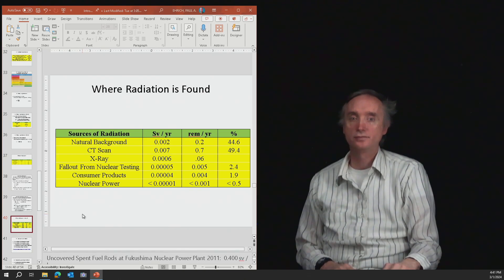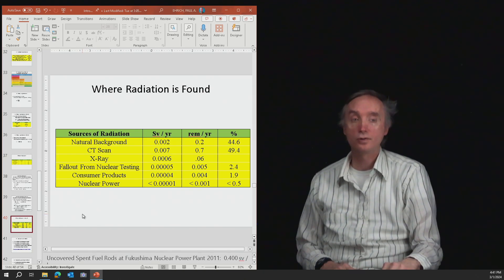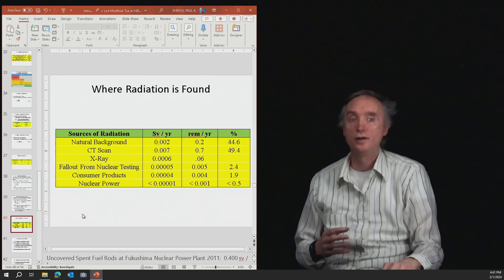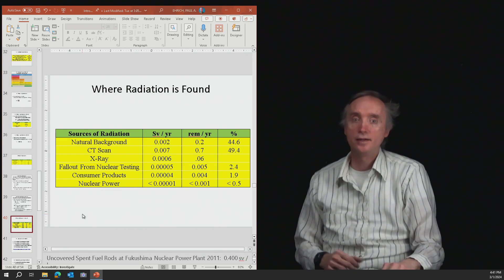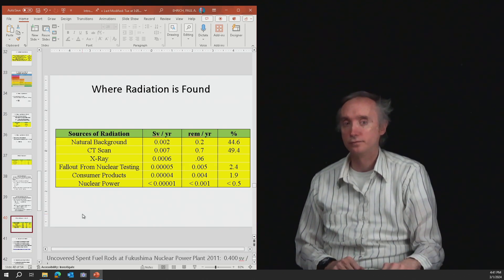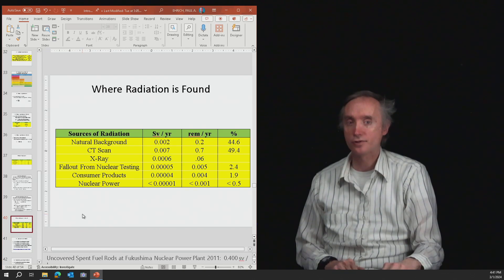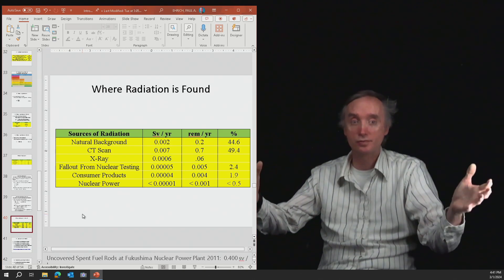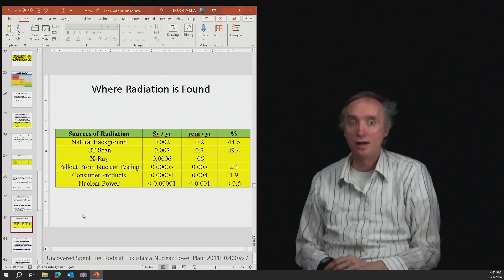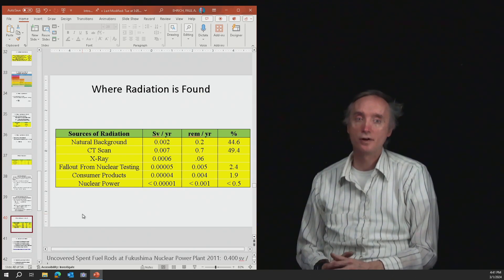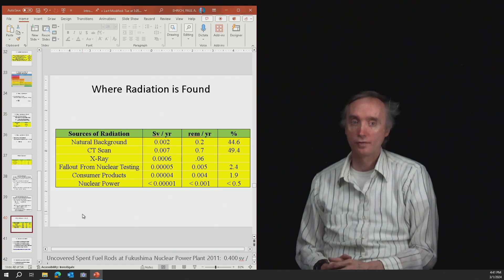Consumer products, okay, things like smoke detectors. So smoke detectors have radioactive substances in them. And then down at the bottom, look at nuclear power. So that's the amount of radiation that escapes a nuclear power plant per year. Not much. So nuclear power plants are very safe, but of course, sometimes there are accidents that occur with them.